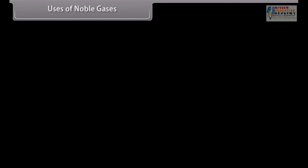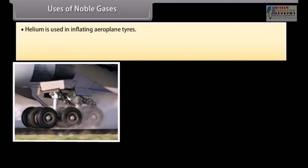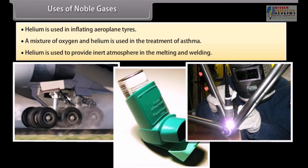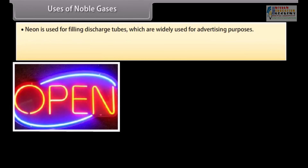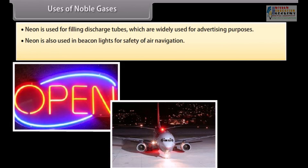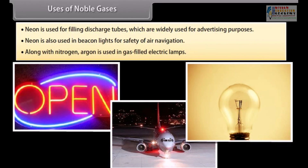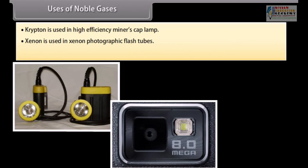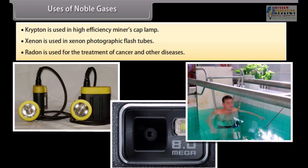The important uses of noble gases are: helium is used in inflating airplane tyres due to its lightness; a mixture of oxygen and helium is used in treatment of asthma; helium provides inert atmosphere in melting and welding. Neon is used for filling discharge tubes with characteristic colors for advertising, and in beacon lights for air navigation due to its fog and storm penetrating power. Along with nitrogen, argon is used in gas-filled electric lamps. Krypton is used in high-efficiency lamps. Xenon is used in photographic flash tubes. Radon is used for the treatment of cancer and other diseases.